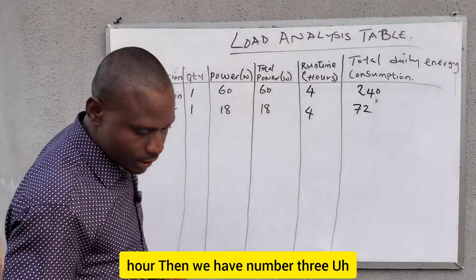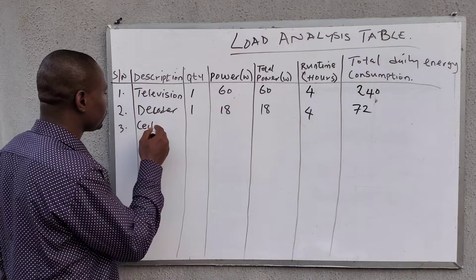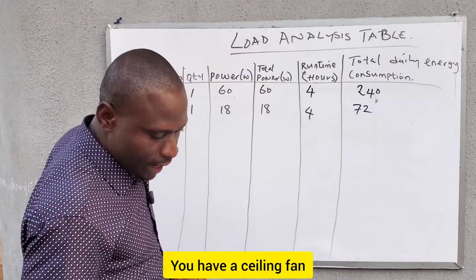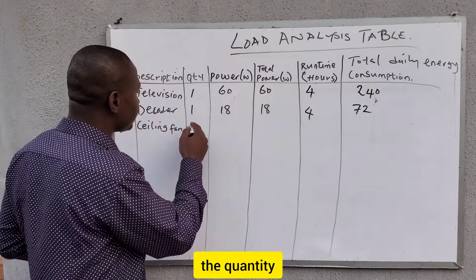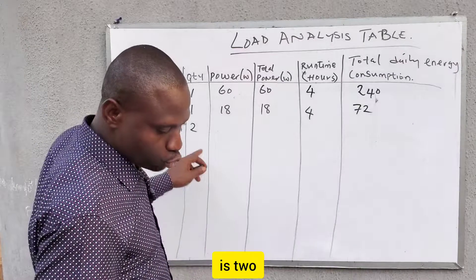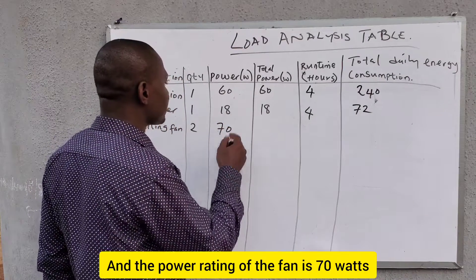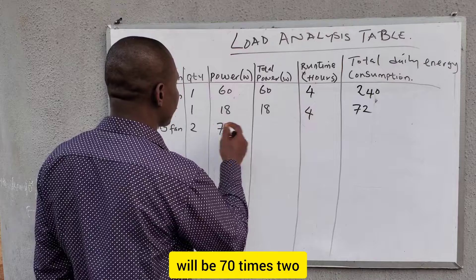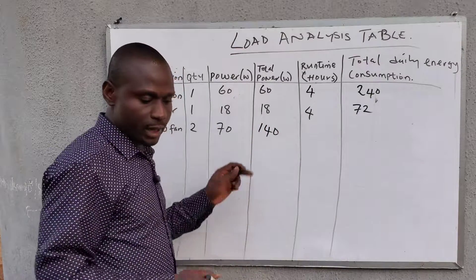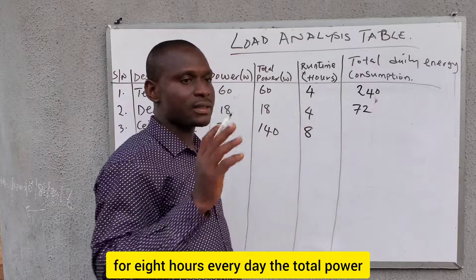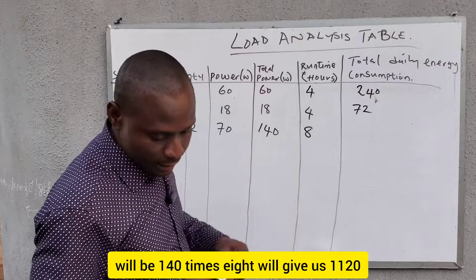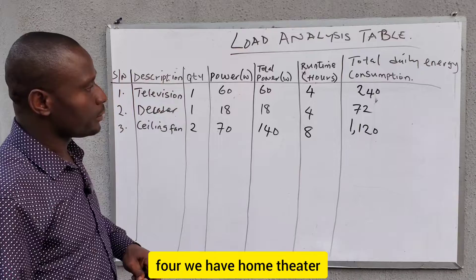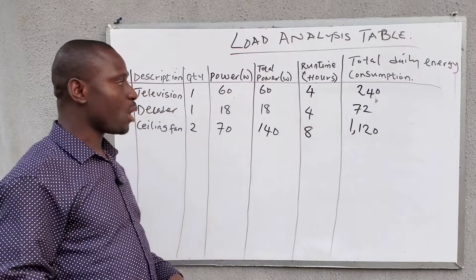Number three is ceiling fans — quantity two, individual power rating 70 watts each. The total power is 70 times two, which is 140 watts. The client wants to use the ceiling fans for eight hours every day, so the total daily energy consumption is 140 times eight, which gives 1,120 watt-hours.